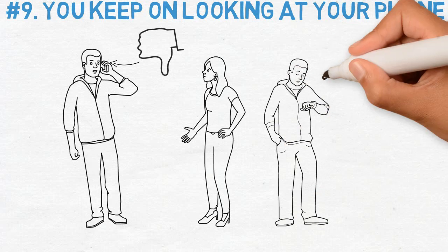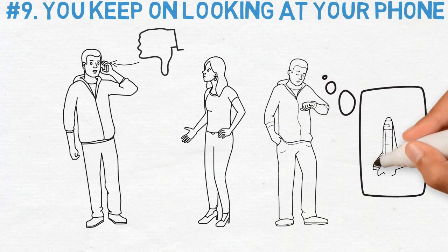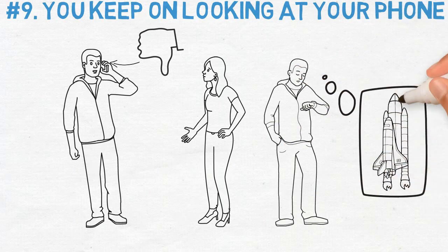Even if you're just peeking at what time it is, you're making her feel like you're spacing out. Put your phone on silent mode and keep it in your pocket.